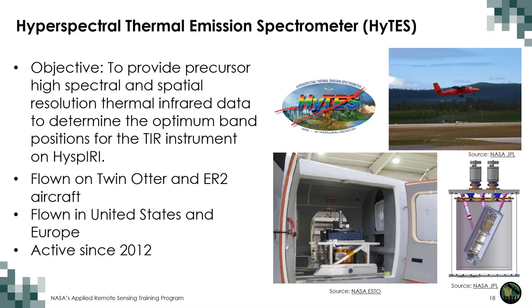Our first new sensor is HyTES, which stands for Hyperspectral Thermal Emission Spectrometer, and is a thermal infrared sensor. Its objective is to provide precursor high spectral and spatial resolution thermal infrared data to determine the optimum band positions for the thermal infrared instrument on HySpiri, a future satellite mission. HyTES has flown on Twin Otter and ER-2 aircraft in the United States and Europe, and has been active since 2012. Images show the HyTES logo, the instrument recording data in Sweden in 2021, a diagram of the instrument, and the instrument onboard a Twin Otter aircraft.